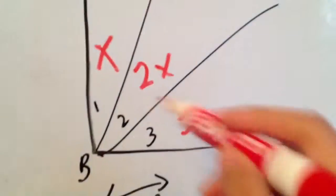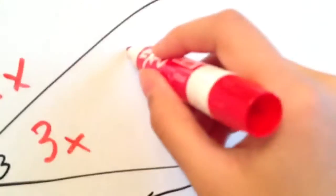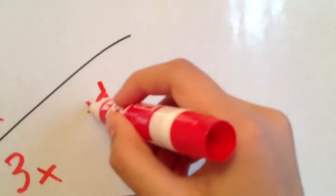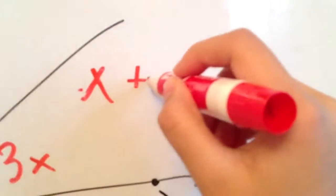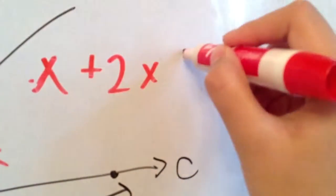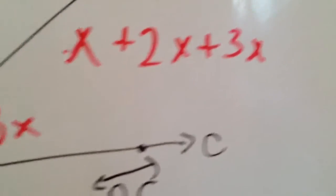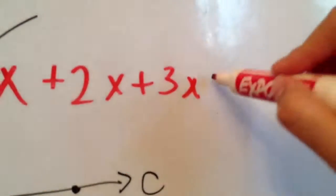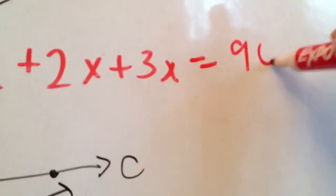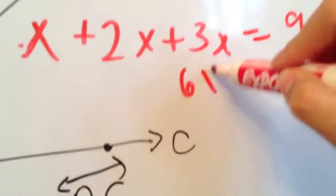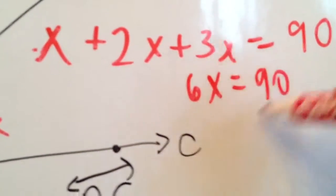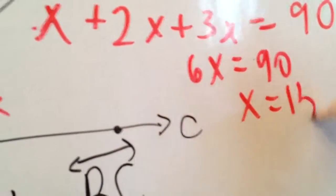So we know that this whole angle is 90 degrees. That's basically equal to X plus 2X plus 3X equals 90 degrees. And that's basically 6X equals 90 degrees. X equals 15. Therefore,